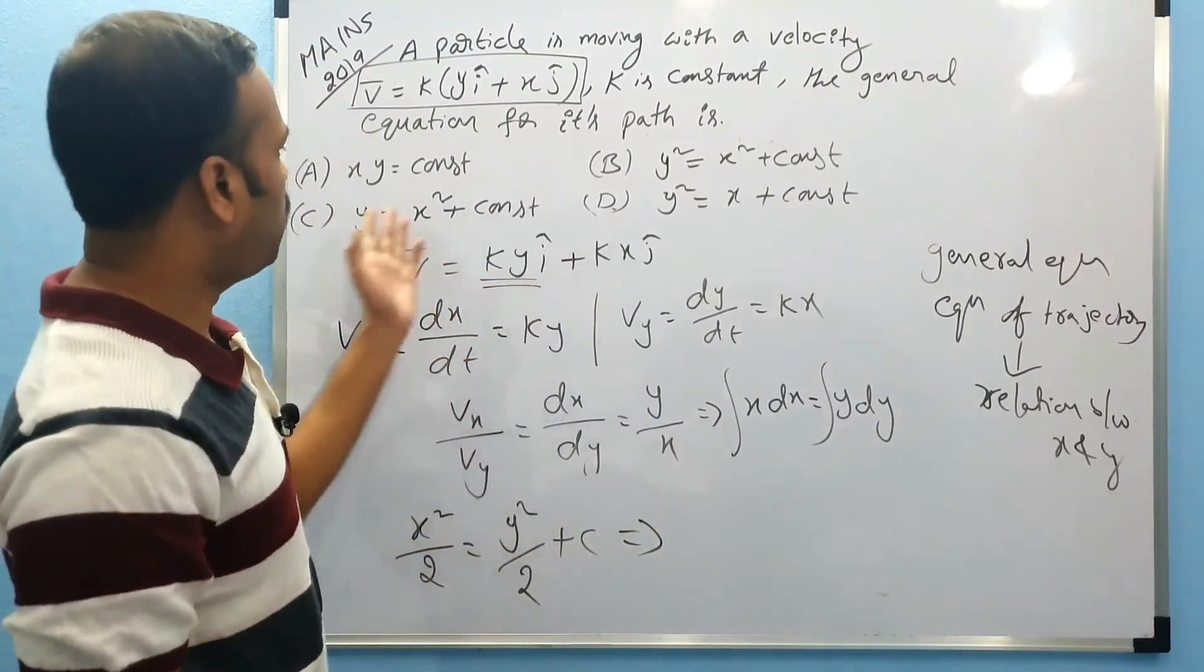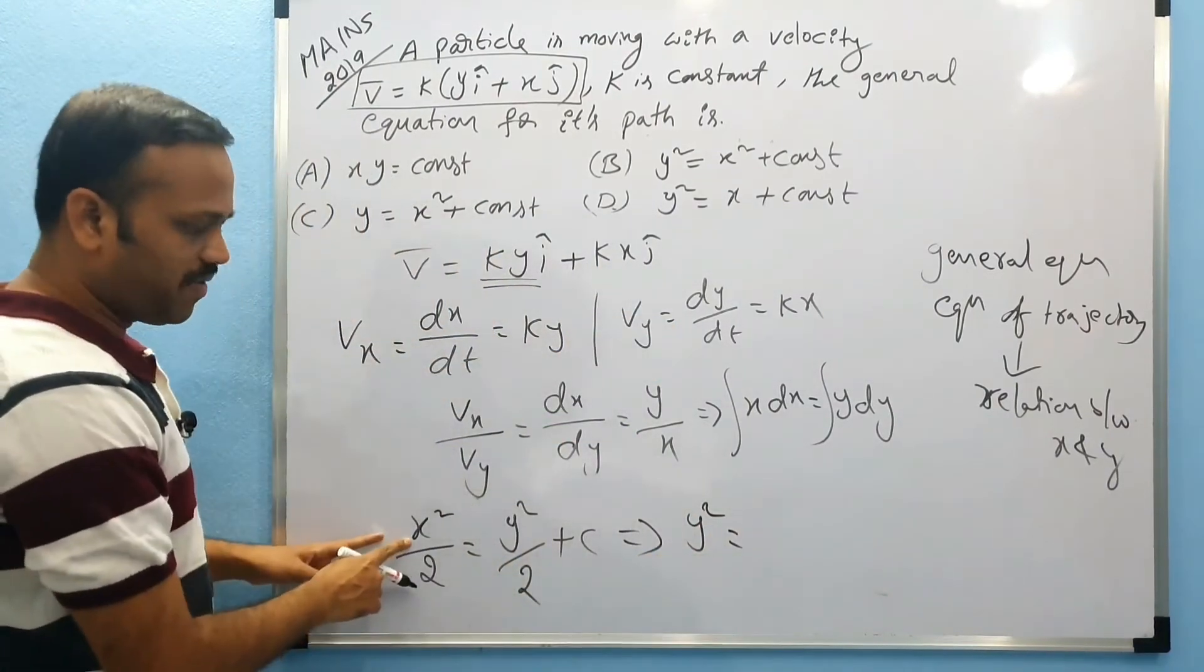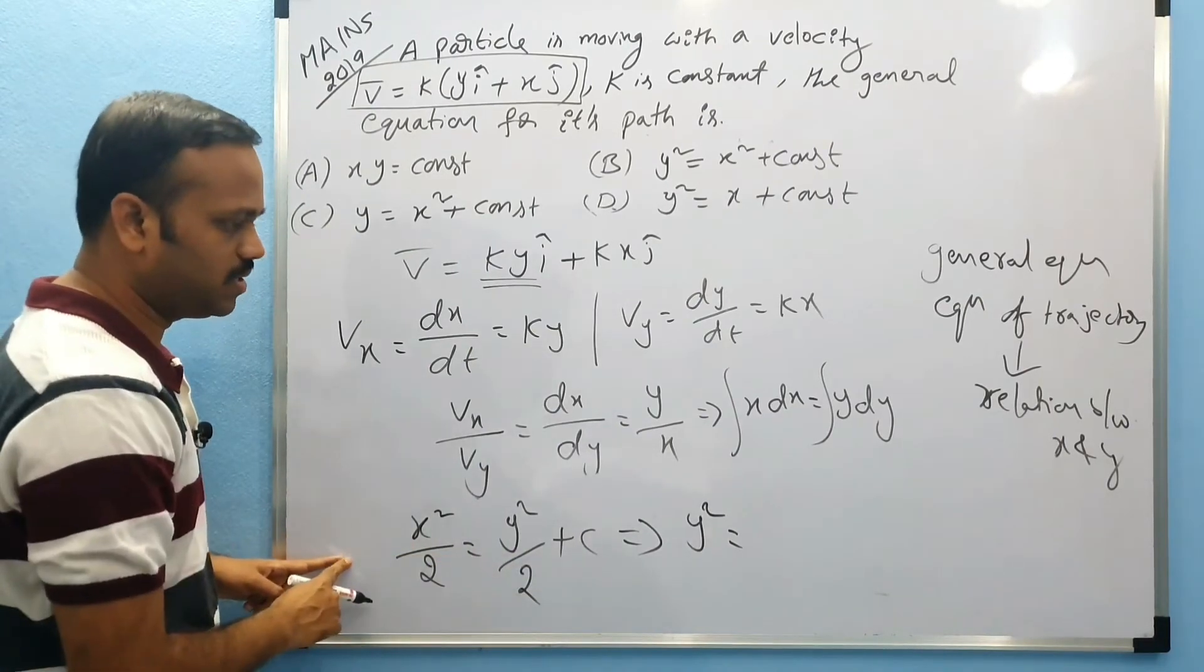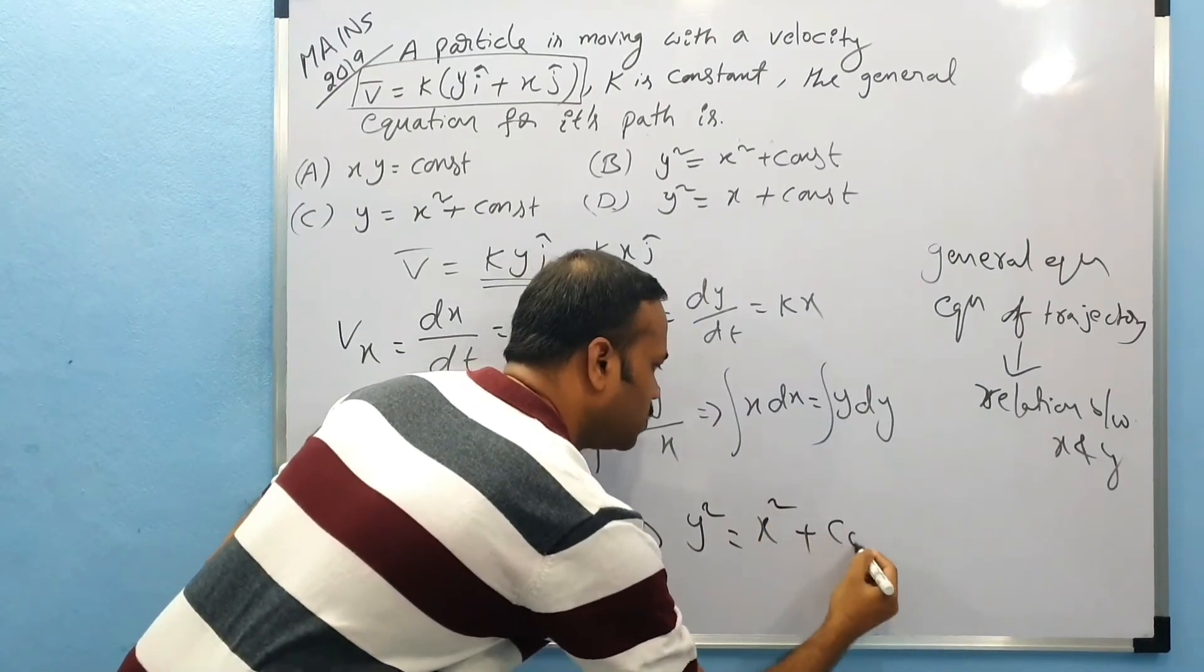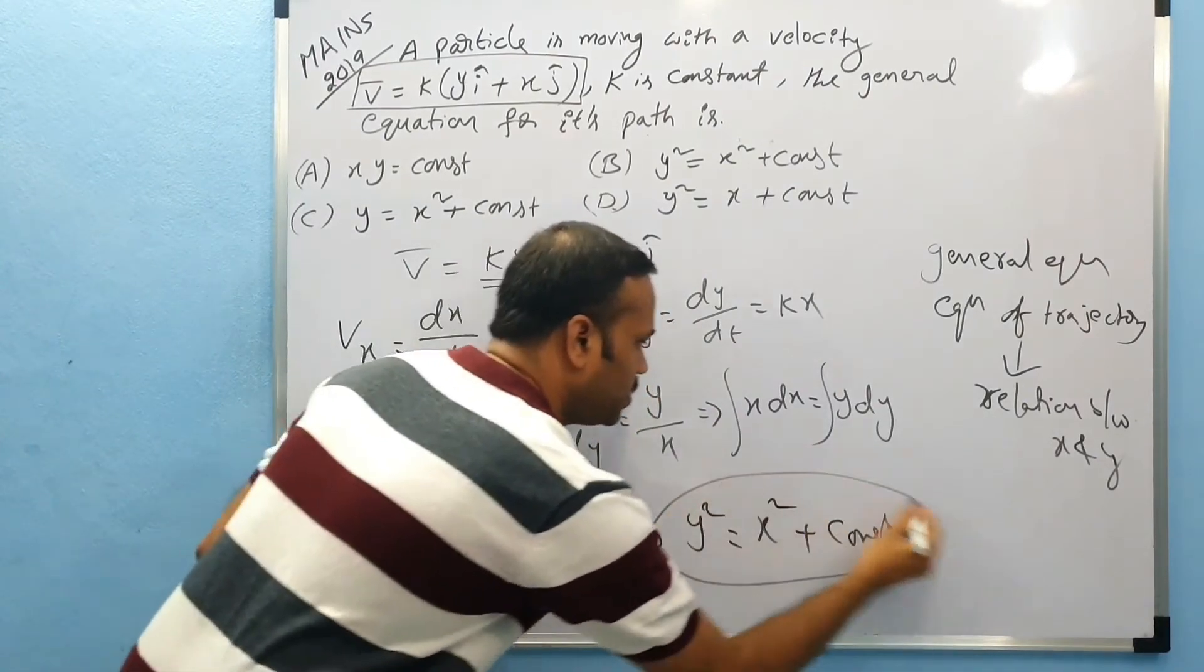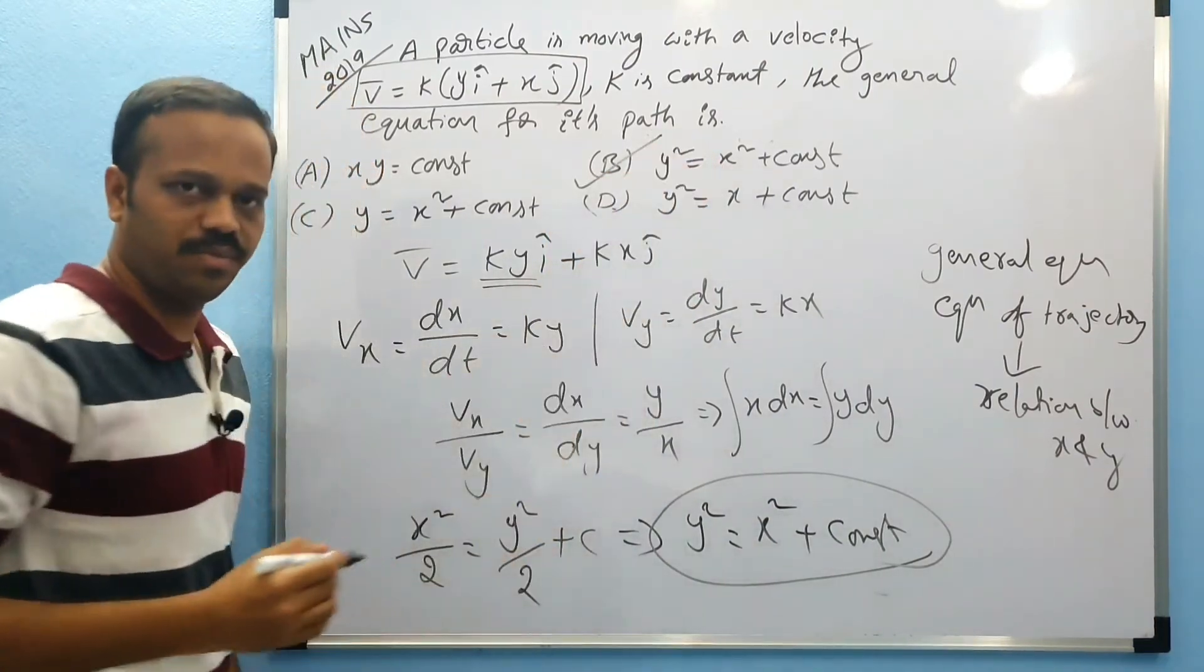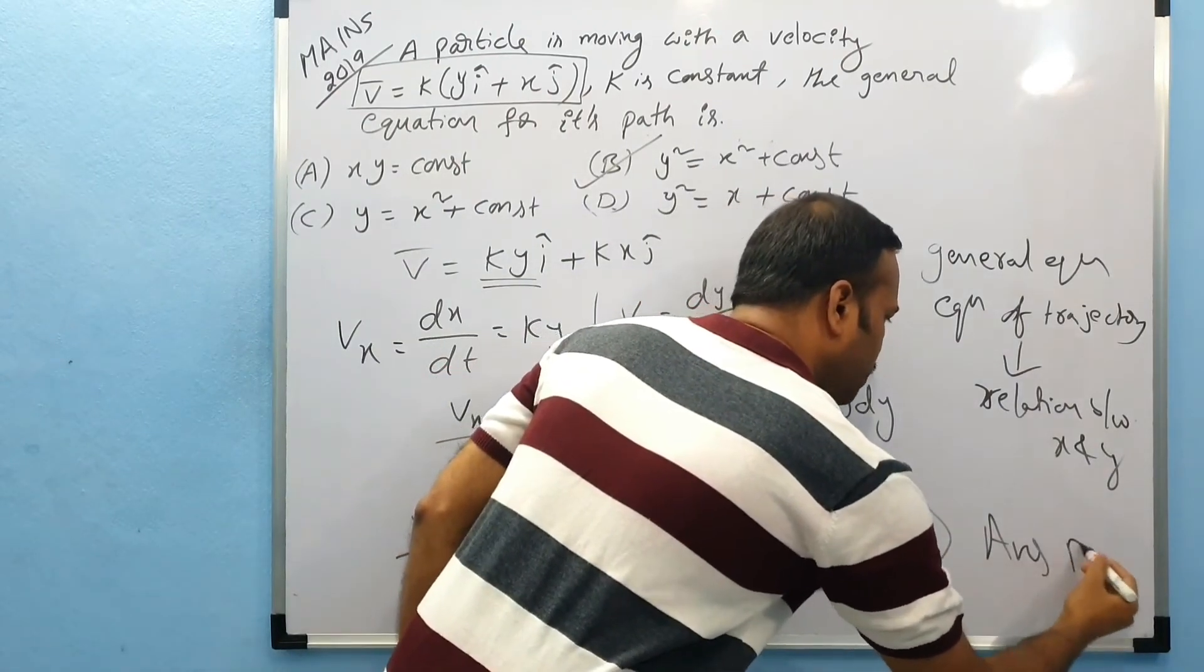If you rearrange, we write y² equals here we have x² plus we get minus 2c. If you take this side, I write that as constant, plus some constant. This is the equation we get for that particle and that is nothing but option B. So answer is option B.